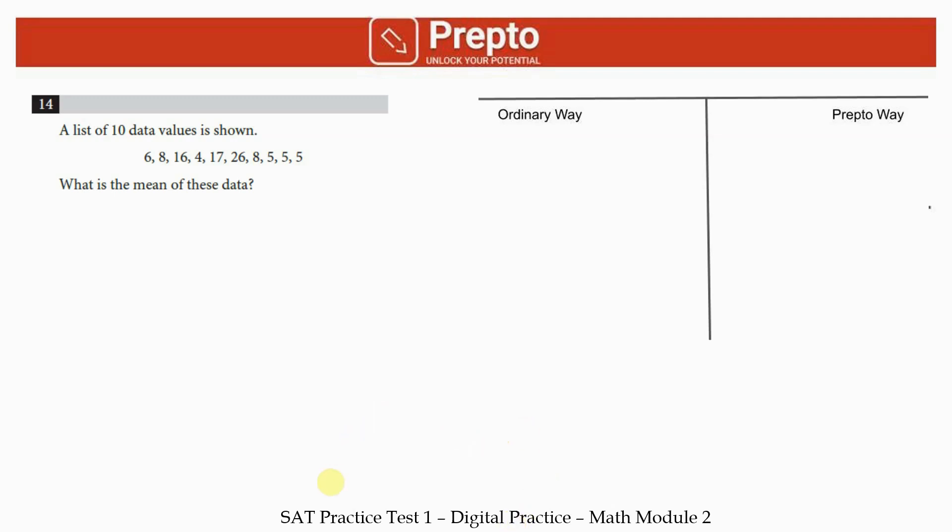Question 14: You have 10 data values and need to find the mean. Normally you would add up these 10 values. Some may be tempted to use the calculator—please time yourself when inputting these values. It will take a decent amount of time, close to a minute or more just adding up on the calculator. It will be quicker to add it yourself.